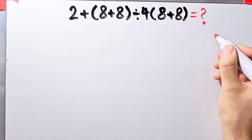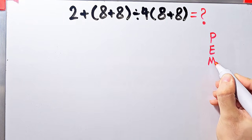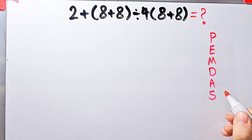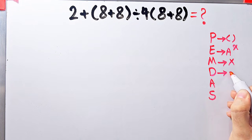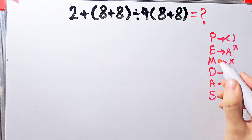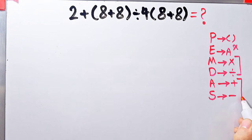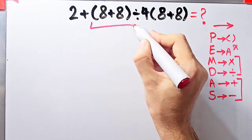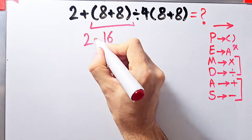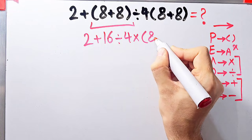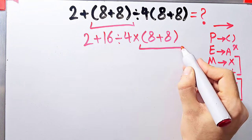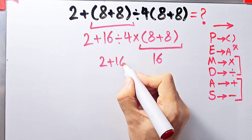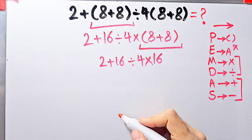To solve correctly, we follow PEMDAS. First simplify the parentheses: 8 plus 8 equals 16. Now we have 2 plus 16 divided by 4, times open parentheses 8 plus 8 close parentheses. Simplify the second parentheses: 8 plus 8 equals 16. Now we have 2 plus 16 divided by 4 times 16, with addition, division, and multiplication present.